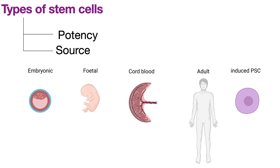The other way of characterizing stem cells is by source. Stem cells derived from embryos at a pre-implantation stage are called embryonic stem cells — these are pluripotent or totipotent. However, they pose ethical questions since isolating embryonic stem cells results in the death of the embryo. Fetal stem cells are usually multipotent and can be derived from fetal blood, kidney, liver, or other organs.